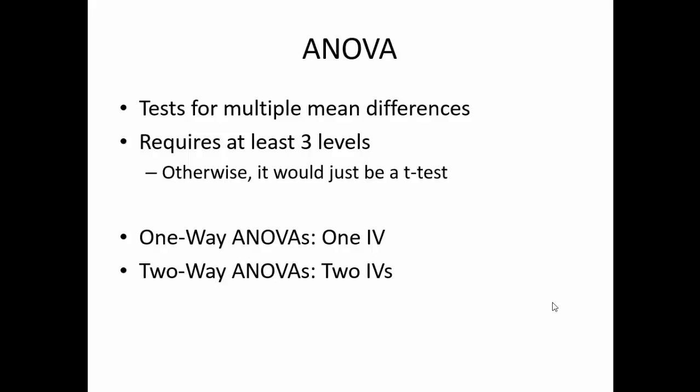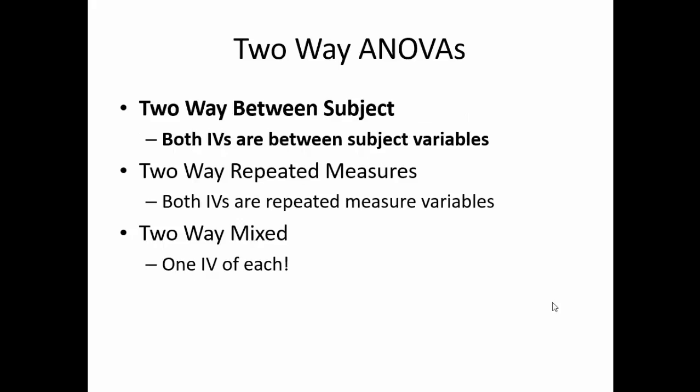A two-way ANOVA allows us to determine differences between two independent variables. In this case, participants will be in conditions — more specifically, each participant will only be in one condition since both independent variables are between-subject variables. Our two-way ANOVA will therefore be a two-way between-subject ANOVA.